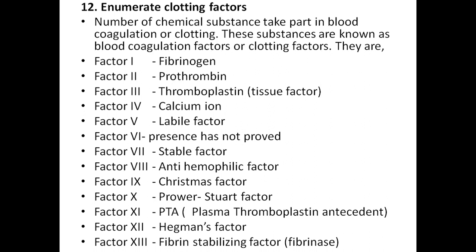Enumerate the clotting factors: the chemical substances that take part in blood coagulation are known as clotting factors. Factor 1 — fibrinogen; Factor 2 — prothrombin; Factor 3 — thromboplastin or tissue factor; Factor 4 — calcium; Factor 5 — labile factor; Factor 6 — not yet proven; Factor 7 — stable factor; Factor 8 — anti-hemophilic factor; Factor 9 — Christmas factor; Factor 10 — Stuart-Prower factor; Factor 11 — PTA (plasma thromboplastin antecedent); Factor 12 — Hageman's factor; Factor 13 — fibrin stabilizing factor.